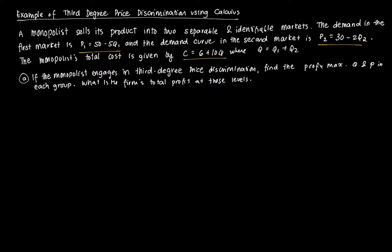If you recall, the first-order condition that satisfies maximum profit requires that the marginal revenue of Group 1 equals the marginal cost, and the marginal revenue of Group 2 also equals the marginal cost. Those are the two FOCs we need to use.